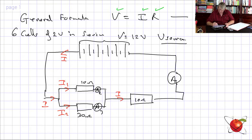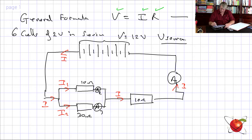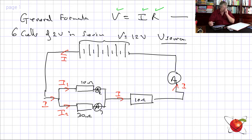The water went around both sides and came back — it's the same amount of water, no extra current was added. The reading on A1 is I. Step one: put in all the information given, readings on meters, etc. Step two: put the current from positive to the negative side. Where the current splits, label it I1, I2, etc.